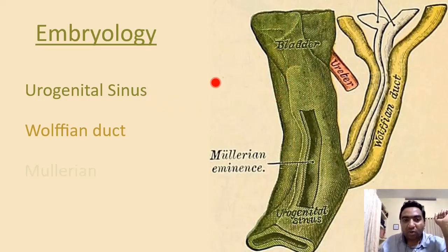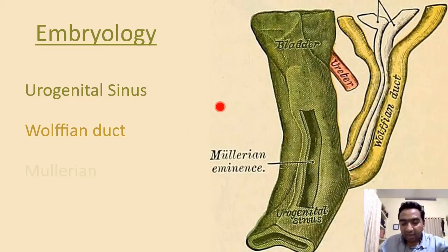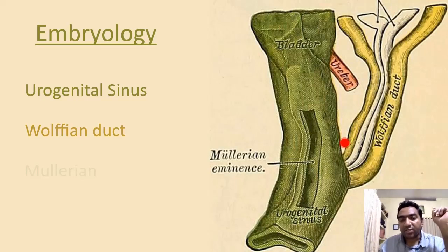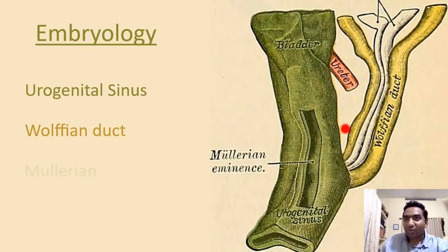When the genitourinary part is together as one tube, it is called the urogenital sinus. In the initial precursor of the urogenital sinus, the Wolffian duct — which becomes the epididymis in the future — drains into the urogenital sinus. The paramesonephric ducts, or Müllerian ducts, which form the urethra, uterus, and fallopian tubes, also drain into the urogenital system.